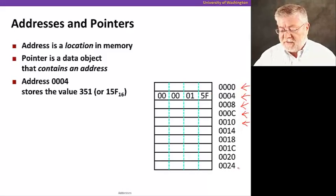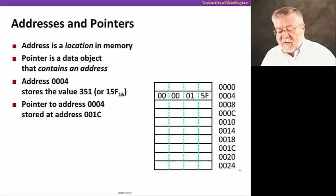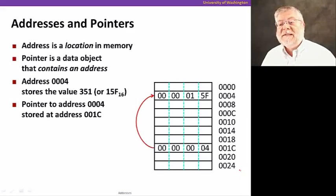So we have these different addresses here from 0x0000 to 0x0024 for all these various locations in memory. A pointer, unlike an address, is a data object that contains an address. So let me give you an example. I can put a pointer to that address of 0x0004 at a different memory location, let's say at the address 0x001C.